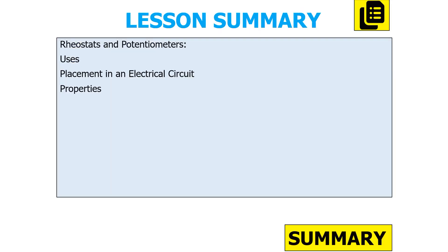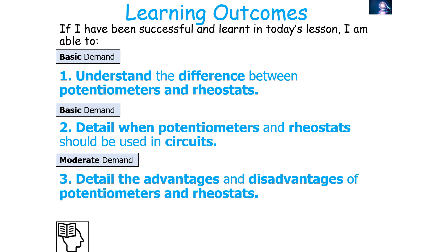To summarise today's lesson, we've looked at rheostats and potentiometers, their uses, their placements in electrical circuits, and the properties that each one has. We should now be able to understand the difference between potentiometers and rheostats as variable resistors, detail where each is used in electrical circuits, and detail their advantages and disadvantages.